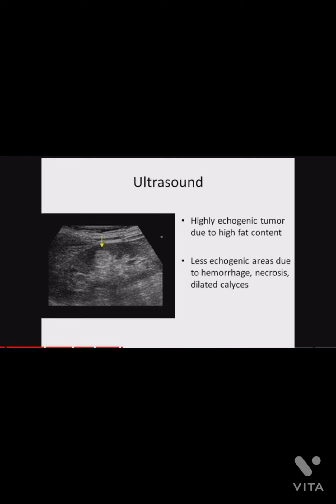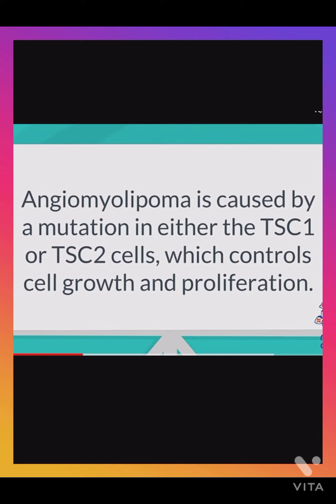The less echogenic areas are due to hemorrhage, necrosis, and dilated vessels. Angiomyolipoma is caused by a mutation in either the TSC1 or TSC2 genes, which control cell growth and proliferation.